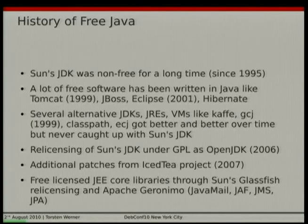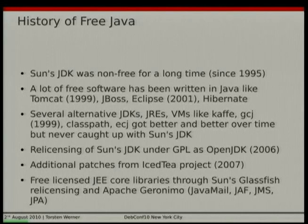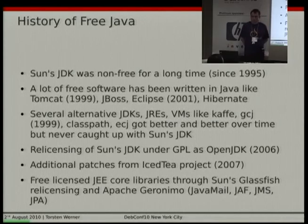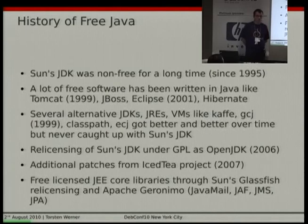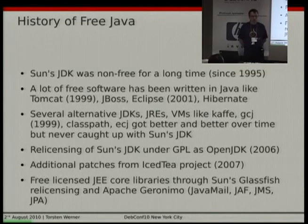There have been several alternative Java development kits, runtime environments, and virtual machines written. Some of them are CAFE, GCJ released in 1999, GNU Classpath, and the Eclipse compiler. All of them got better and better with time, but never as good as the original Sun Java. We always had the problem that older code could be built with the free alternatives, but newer code kept using features from Sun's implementation. Everything changed with the licensing of the Java Development Kit in 2006 under the GPL with the name OpenJDK.